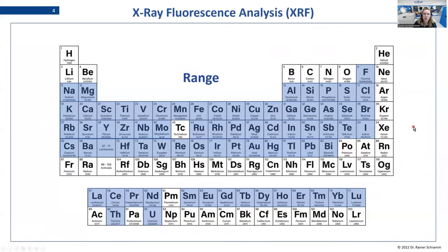What is the range that we can measure with X-ray fluorescence analysis? A rule of thumb is that we can measure from fluorine to uranium as the heaviest element. There are special options where you can also measure lighter elements up to boron, but that requires a lot of extra effort. Generally, for most devices it starts with fluorine, and for some devices it starts with sodium or magnesium, depending on the configuration of your device.